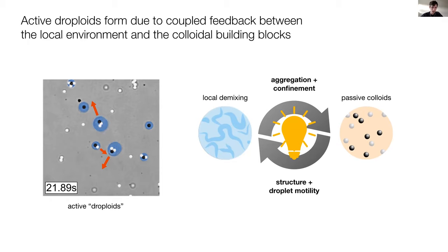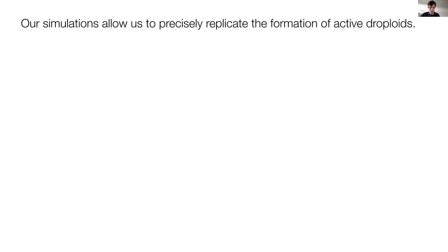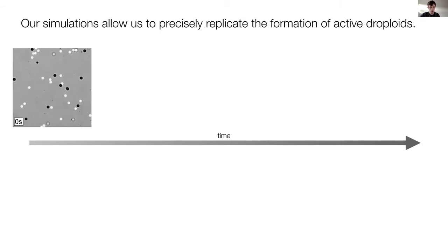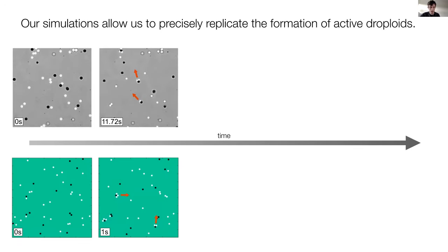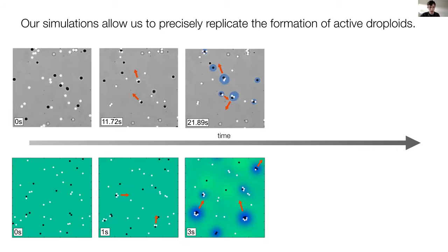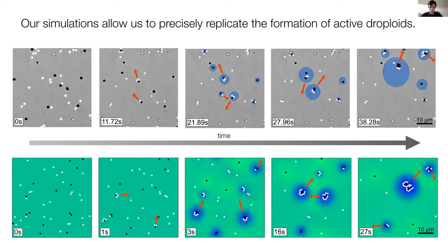We also did simulations — the collaboration with Düsseldorf and Darmstadt — which helped us understand the processes in our experiments. We start with binary colloids in the simulations and observe active colloidal molecules forming over time. Very nicely, the simulations show the droplet in terms of water concentration: the darker the blue, the more water content. In experiments we only see the droplet interface. The simulations also show that over time these droplets grow and fuse together.